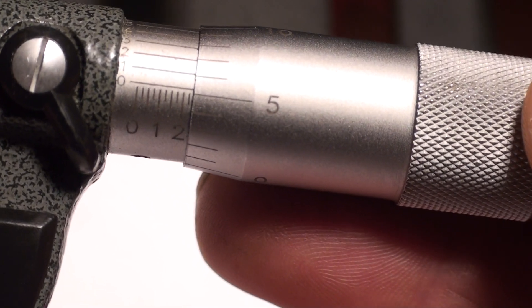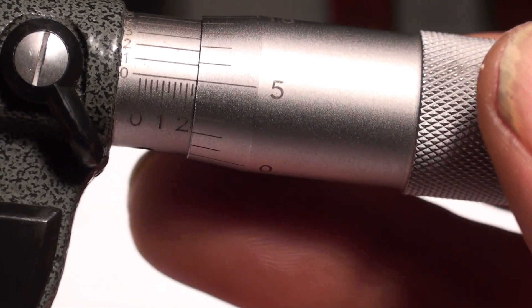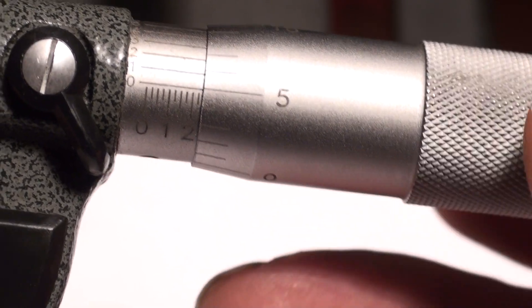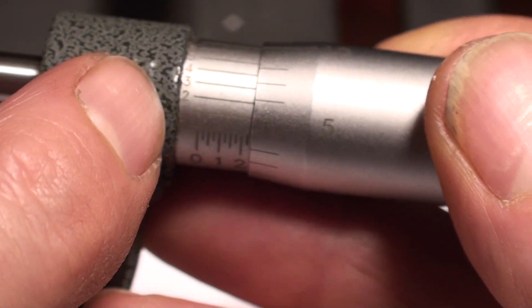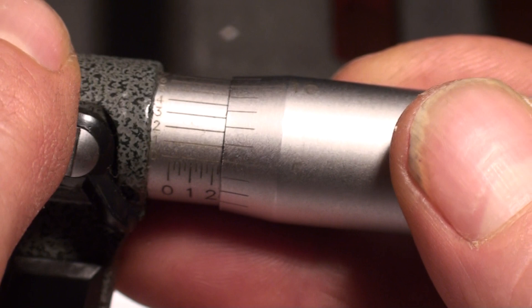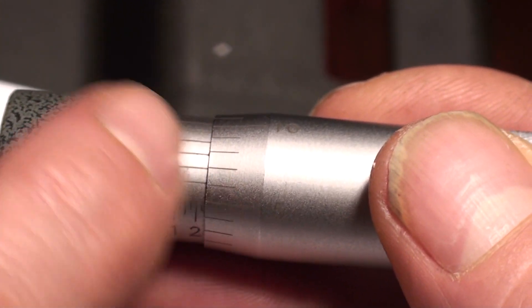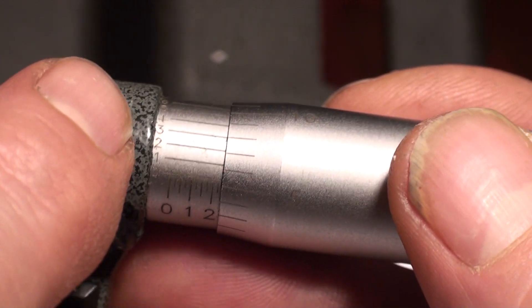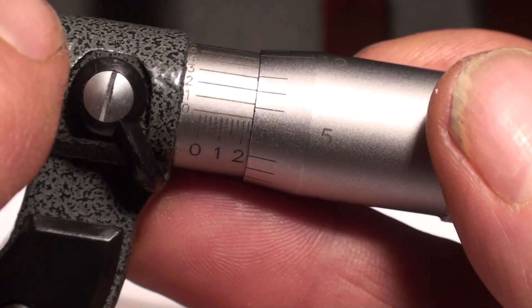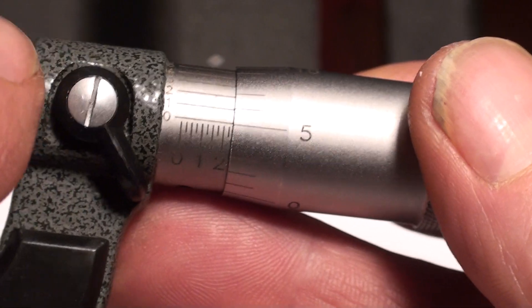Now this particular micrometer reads in ten-thousandths. The ten-thousandths is this other line here. See these lines? So each thousandth here is ten digits. Each thousandth is divided by ten. It's as simple as just lining it up.